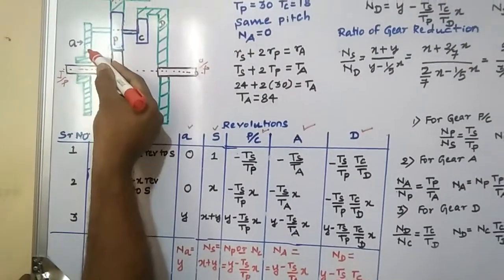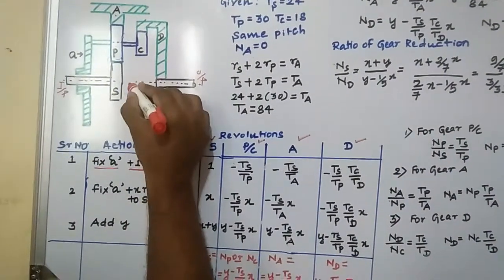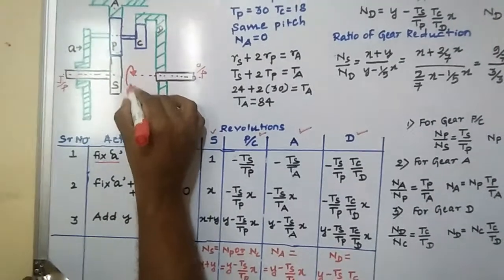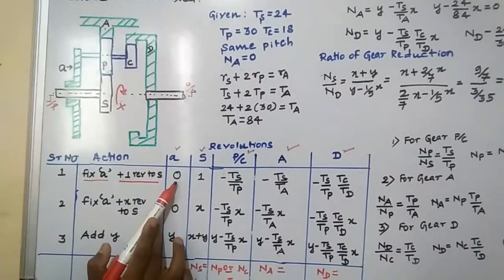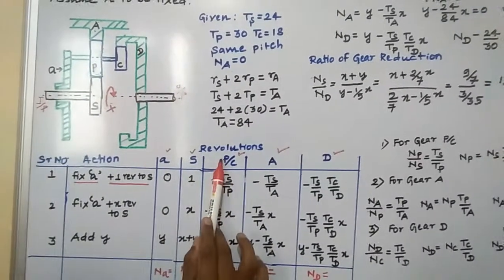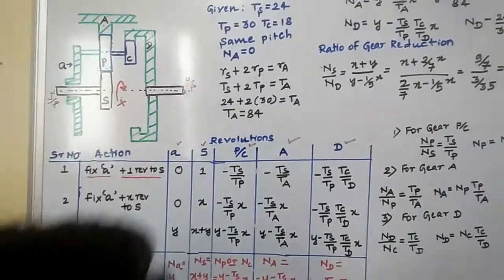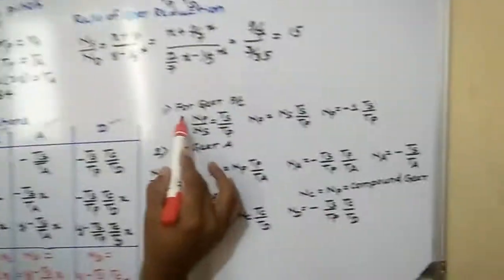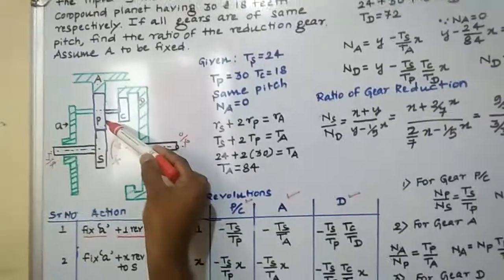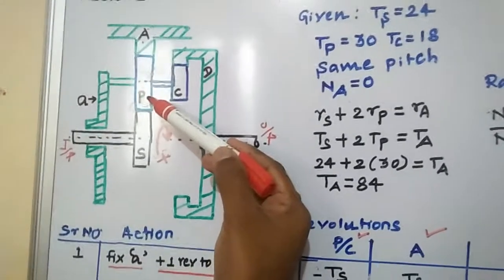First, fix the arm A — that means arm A is fixed, so it comes as zero. You have to give plus one revolution to S, the sun gear. Plus means clockwise direction. Then I will find the velocity of P or velocity of C. I have taken NP/NS — because NP is the driven and NS is the driver. You are starting from the sun gear that is the input, and the planet gear becomes the follower.